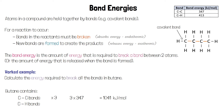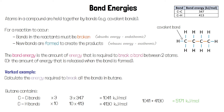We also have some carbon-hydrogen bonds. In a molecule of butane, there are 10 of these bonds. Each requires 413 kJ per mole to break, so 10 times 413 means we would need 4,130 kJ per mole to break all the carbon-hydrogen bonds. To calculate the total energy needed to break all the bonds in butane, we add these numbers together: 1,041 plus 4,130 gives us 5,171 kJ per mole.